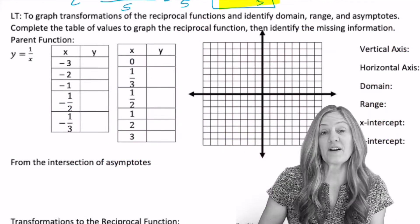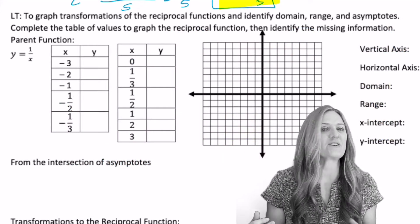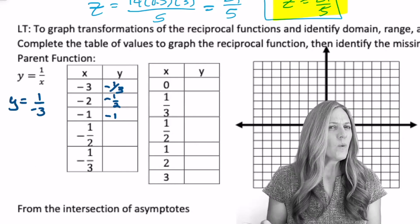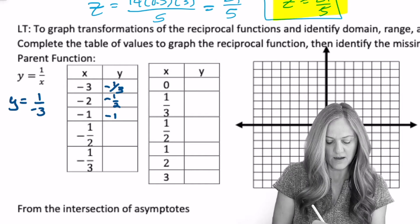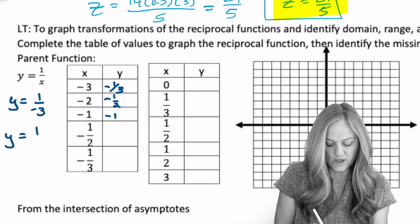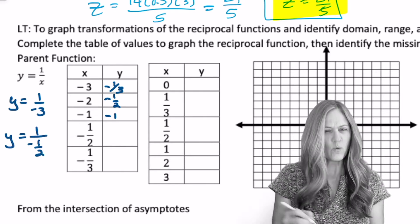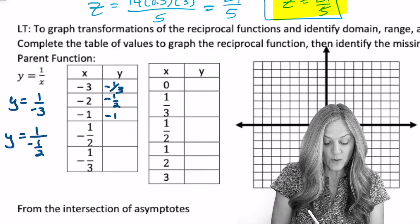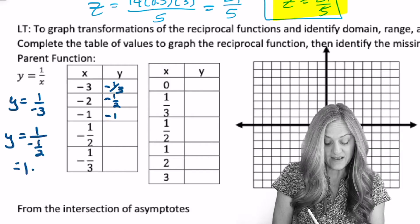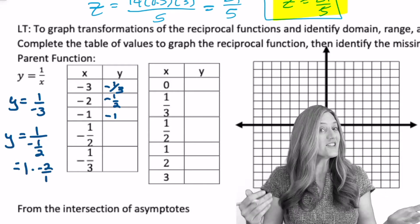The reciprocal function. Let's learn a new parent function. Fill in the table of values. 1 divided by negative 1 half. What are we going to do with that? Well, y equals 1 divided by negative 1 half. When I divide by a fraction, I multiply by the reciprocal. So it equals 1 times negative 2 over 1, or just negative 2.